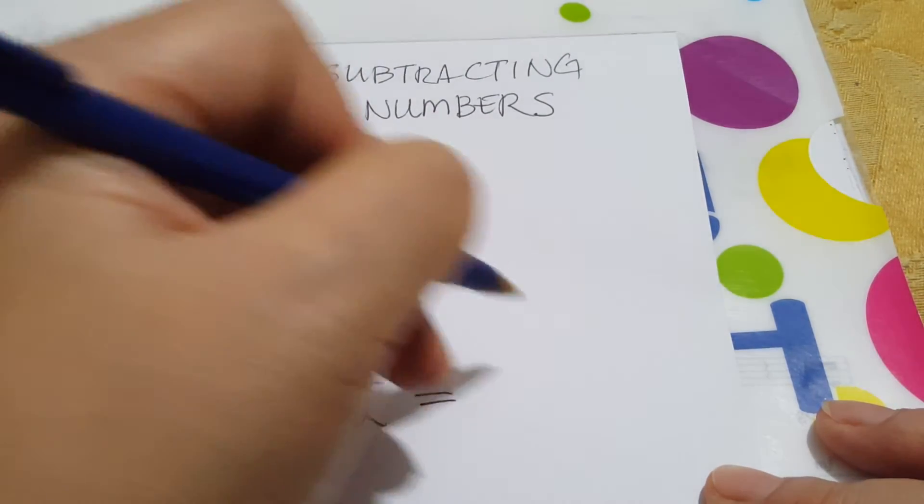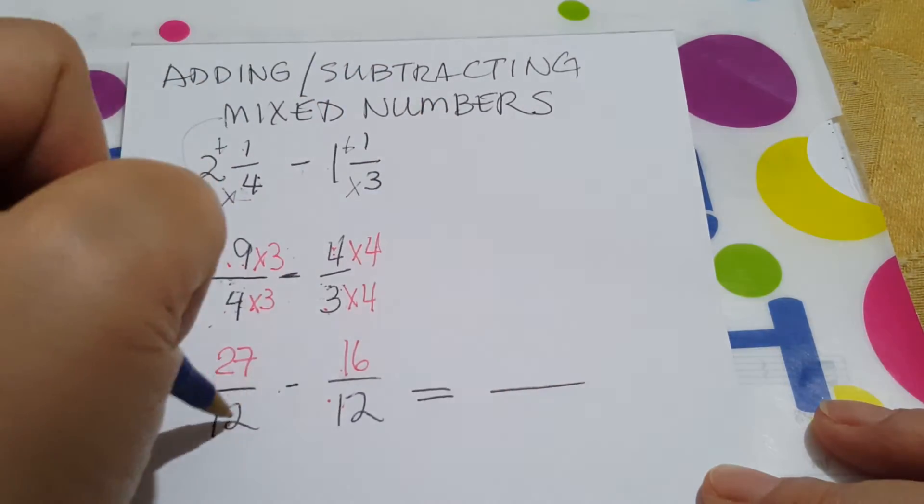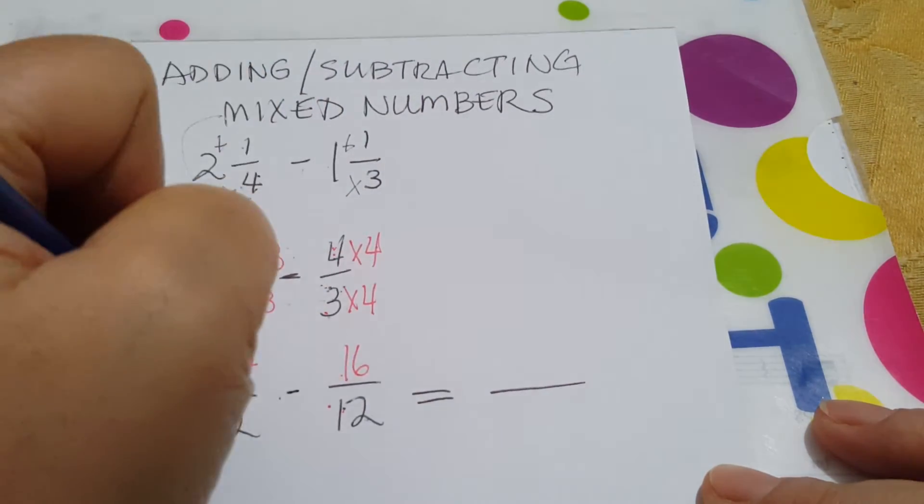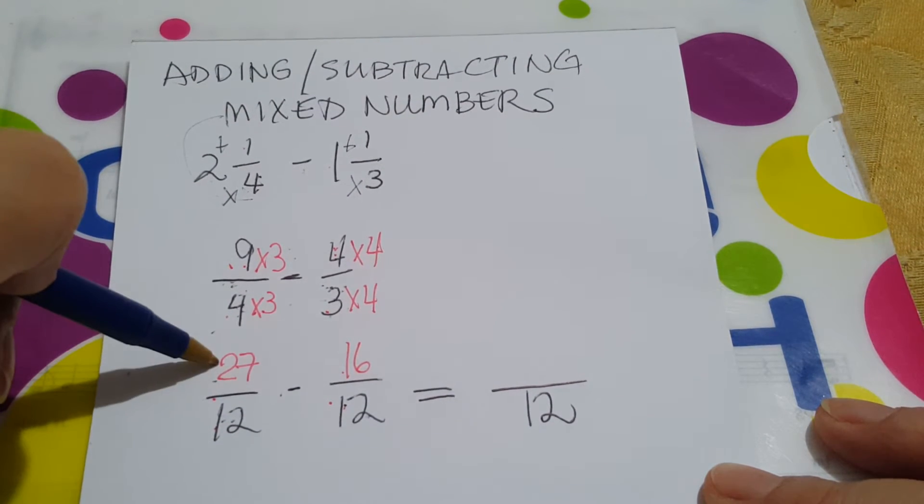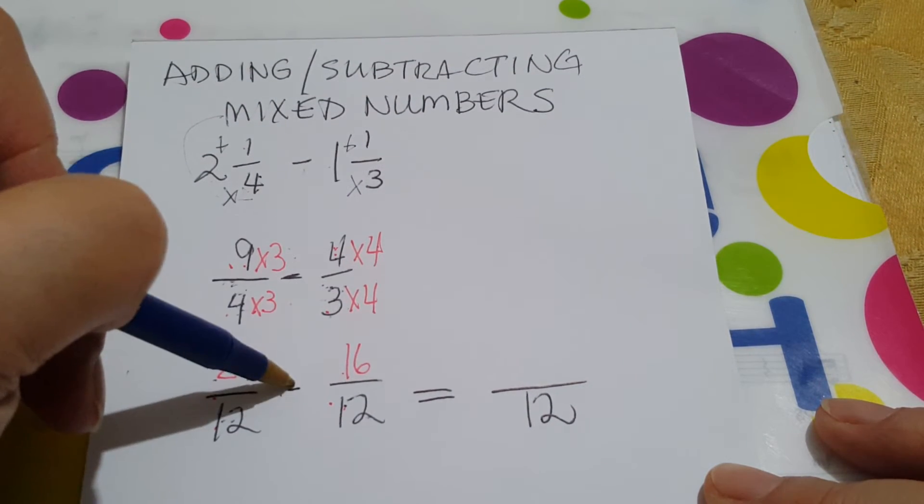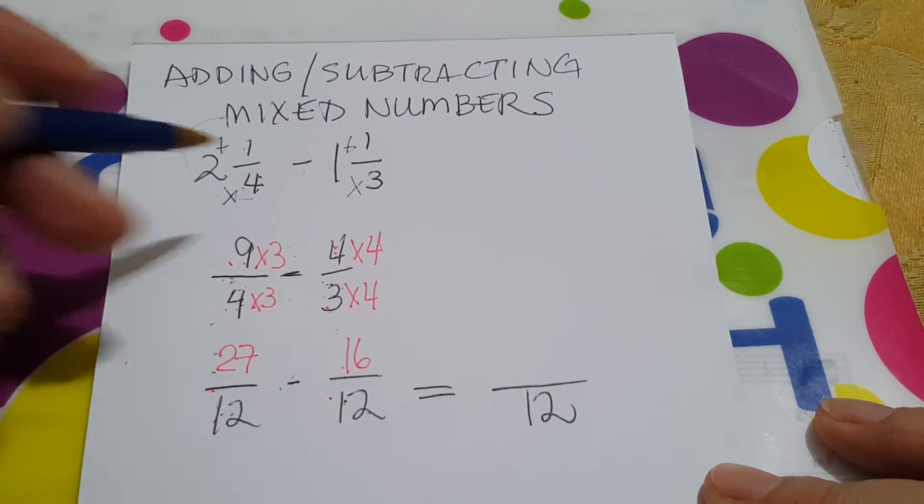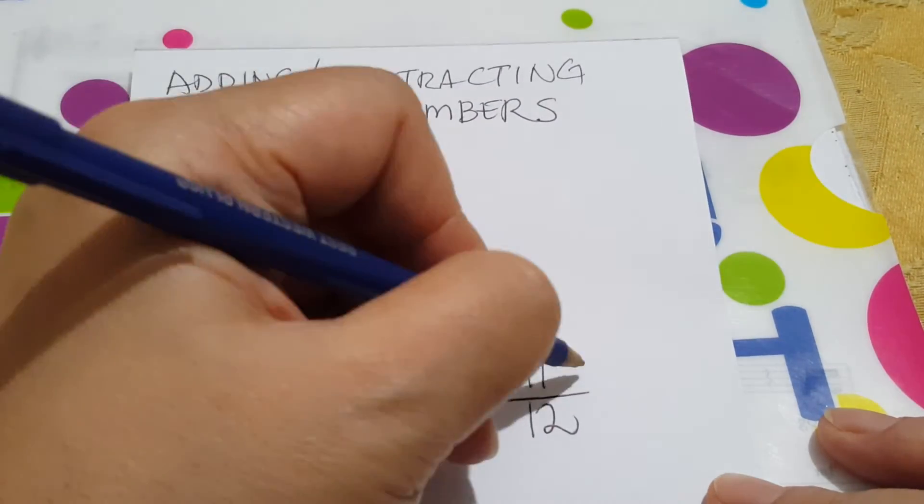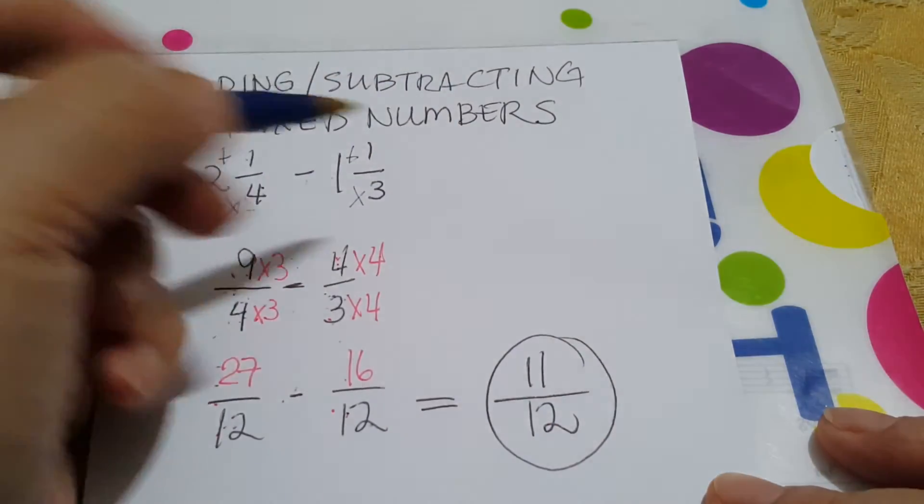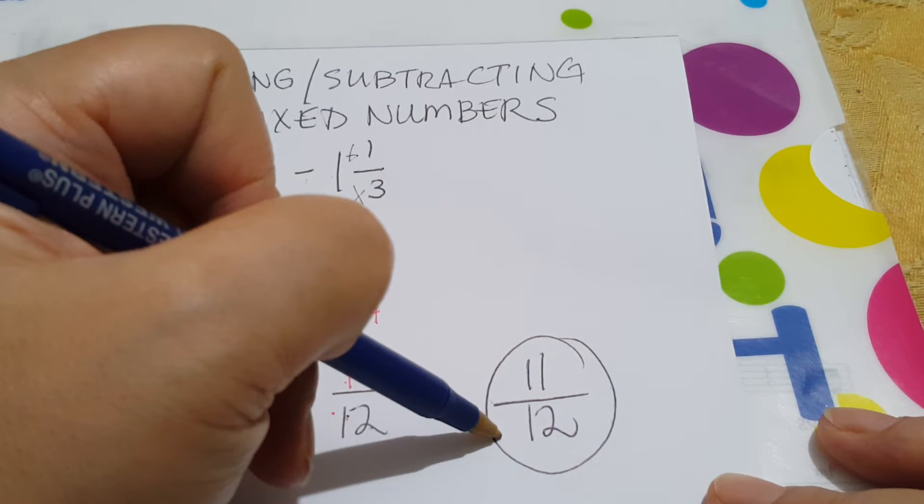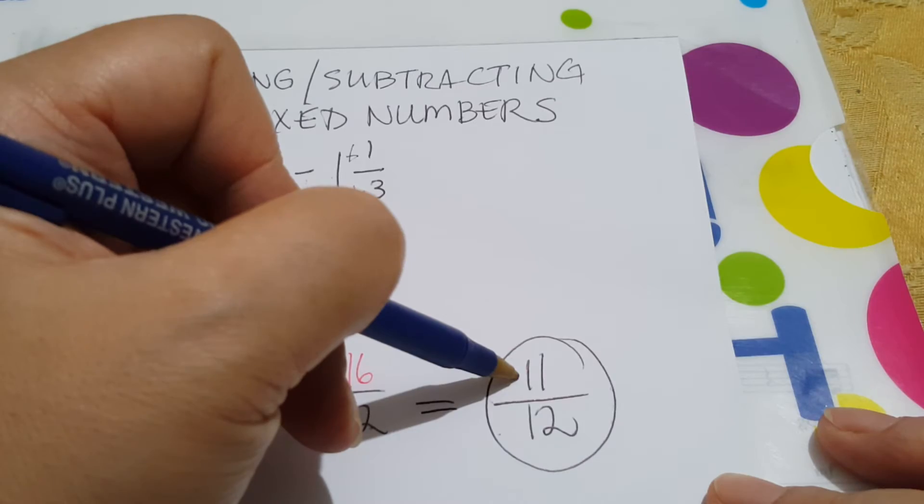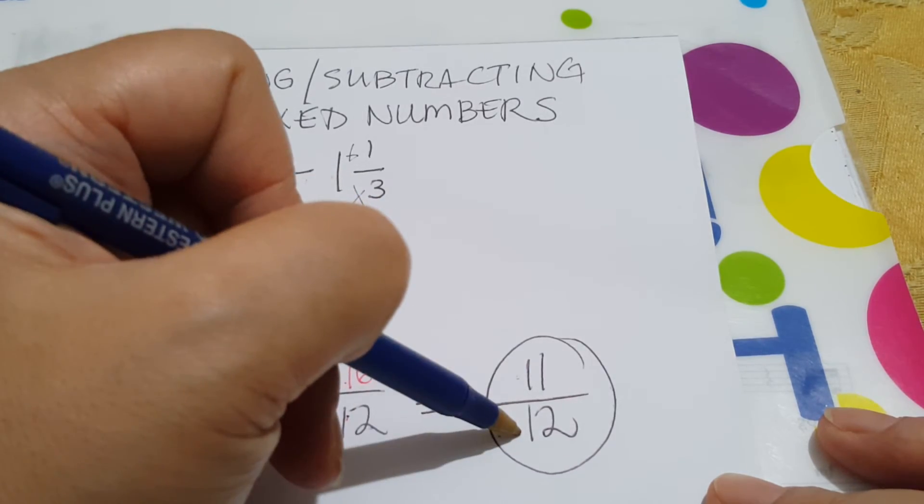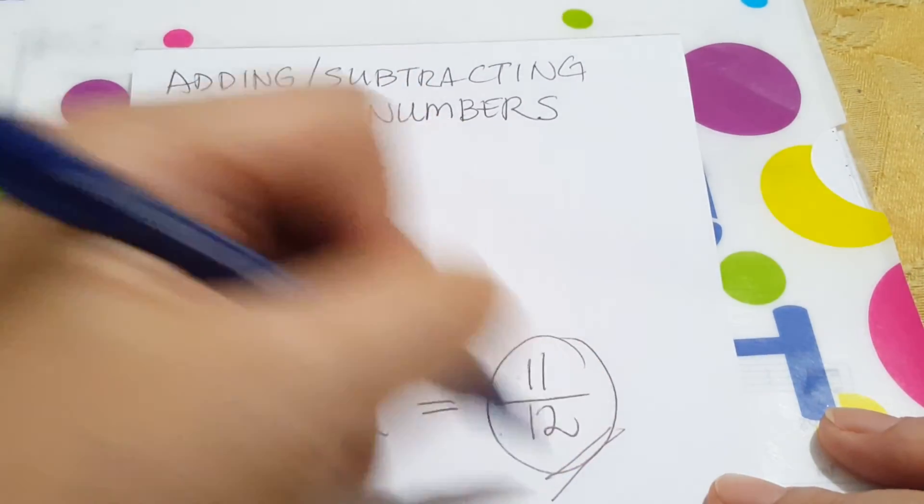And the answer is, what is our denominator? Always remains the same. What is now our numerator? 27 minus 16, which will give you 11. Now is 11 over 12 lowest terms? Yes. 11 is a prime number and 11 is not a factor of 12. So this is your final answer.